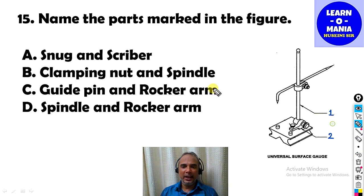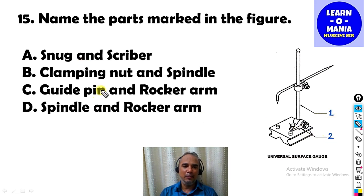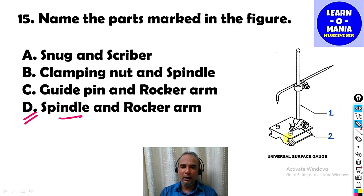Our next MCQ: Name the parts marked in the figure. This is a surface gauge. Number 1 and number 2 are marked on it. The answer is option D — number 1 is the spindle and number 2 is the rocker arm.